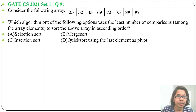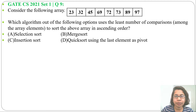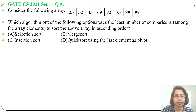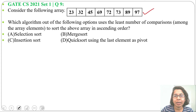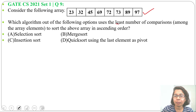Let's solve a previous question. This question was asked in GATE CS 2021, Set 1, Question Number 9. An array is given — which algorithm out of the following options uses the least number of comparisons among the array elements to sort the above array in ascending order? The array is already in ascending order, and we need to find which algorithm will sort it with the least number of comparisons.